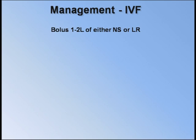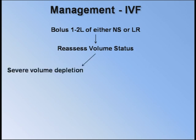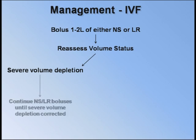You should consider a series of smaller boluses in patients with a history of cardiac dysfunction. Once one to two liters are in, reassess the patient's volume status. If they still appear severely volume depleted — that is hypotensive, tachycardic, with poor urine output and with non-visible neck veins — continue the fluid boluses of NS or LR until the volume status is more improved.